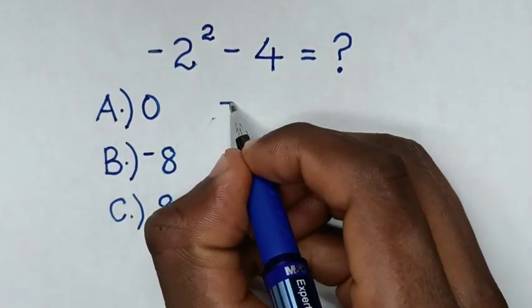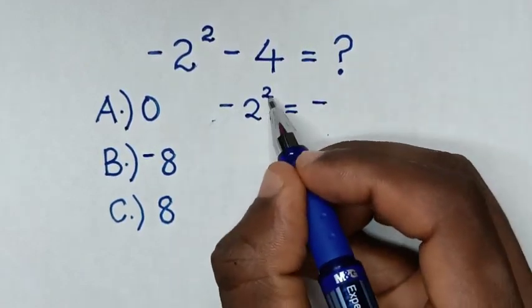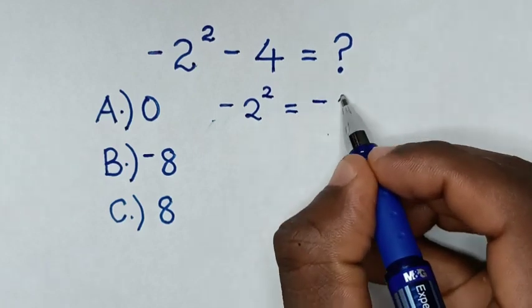So, negative 2 squared: 2 squared is 2 times 2, which is 4.